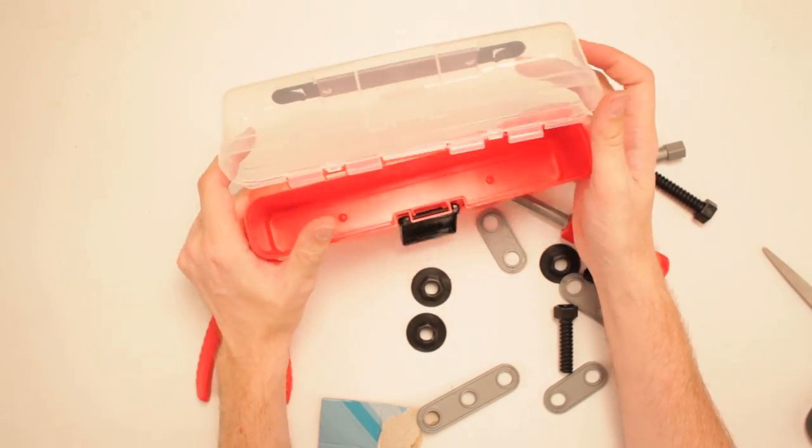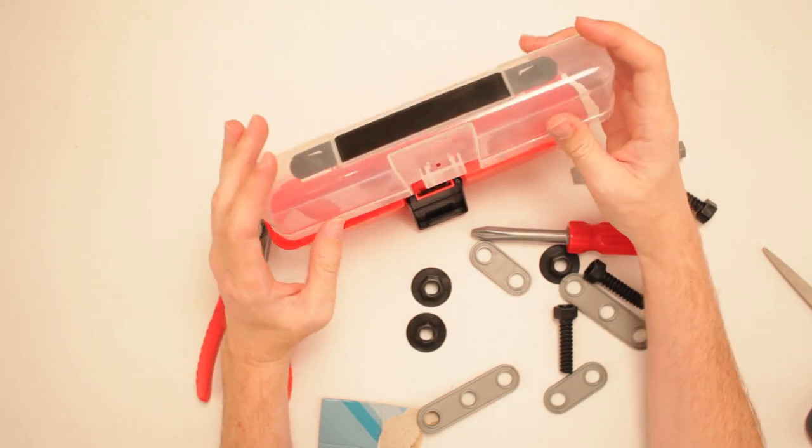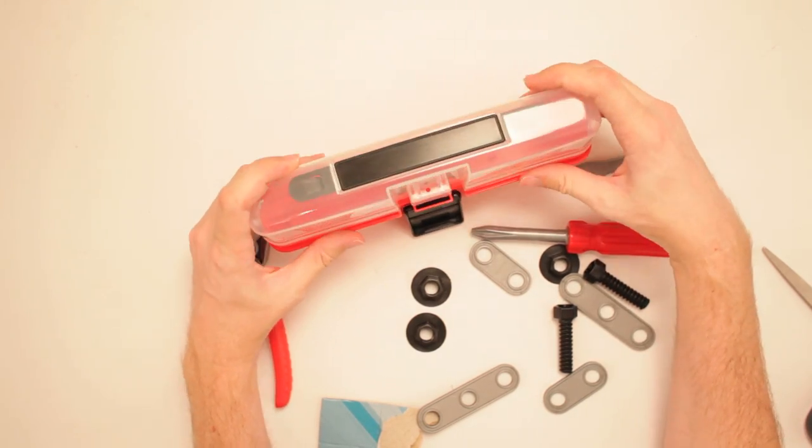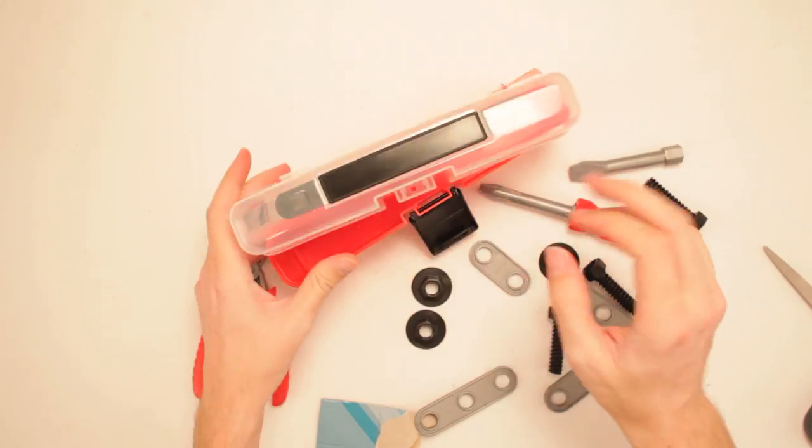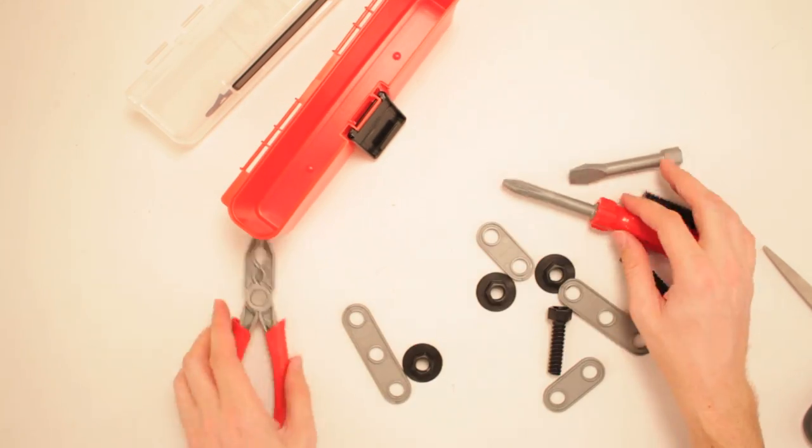So we got our little toolbox. That comes apart very easily, just so you're aware at home. In case you wanted to keep it pristine. Yep. Yep. No problem there. It just snaps right back on and off. Okay. Then we got this thing here.